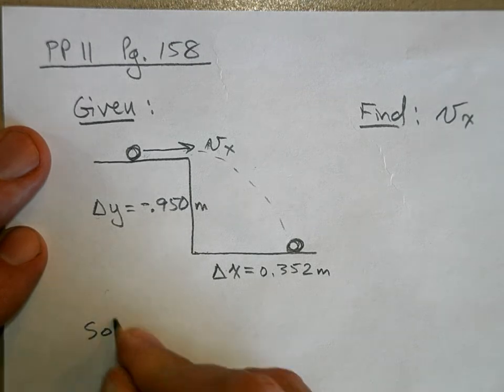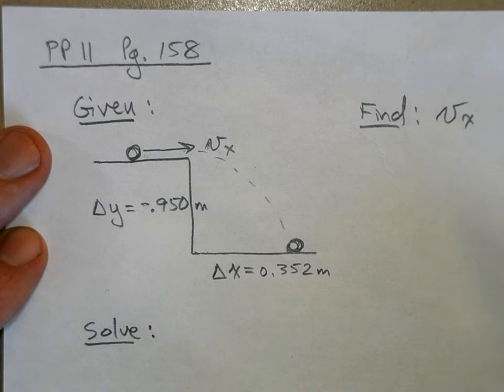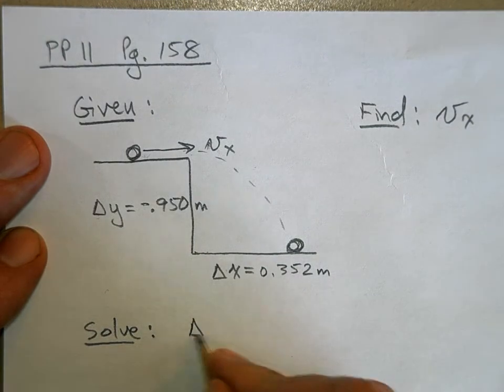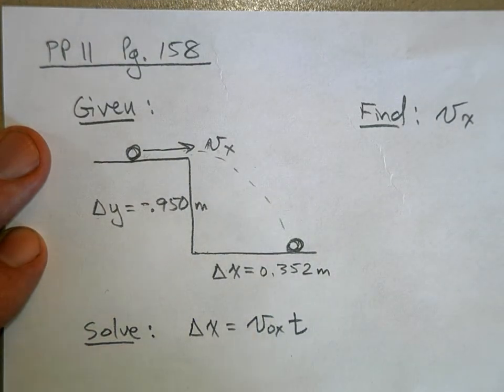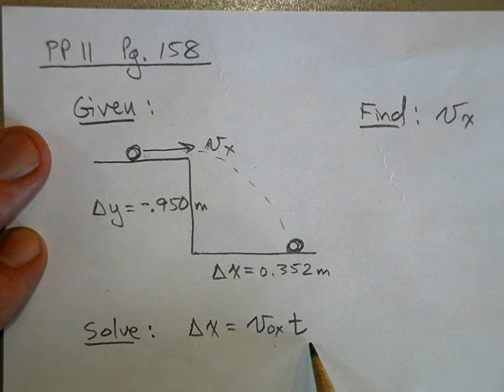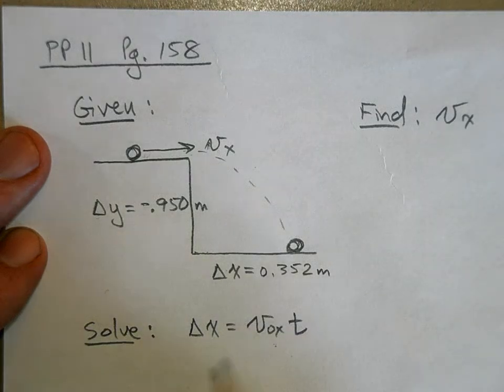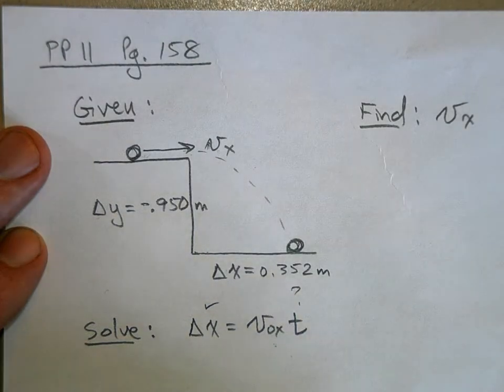So let's solve. Now, the velocity in the x direction, there's only one equation that we use in the x direction for projectile motion, and that's this one. And this is really what we're trying to find because the velocity in the x direction is a constant. So we know what Δx is, but we don't know what time is, so we need to find the time in order to solve for Vx.